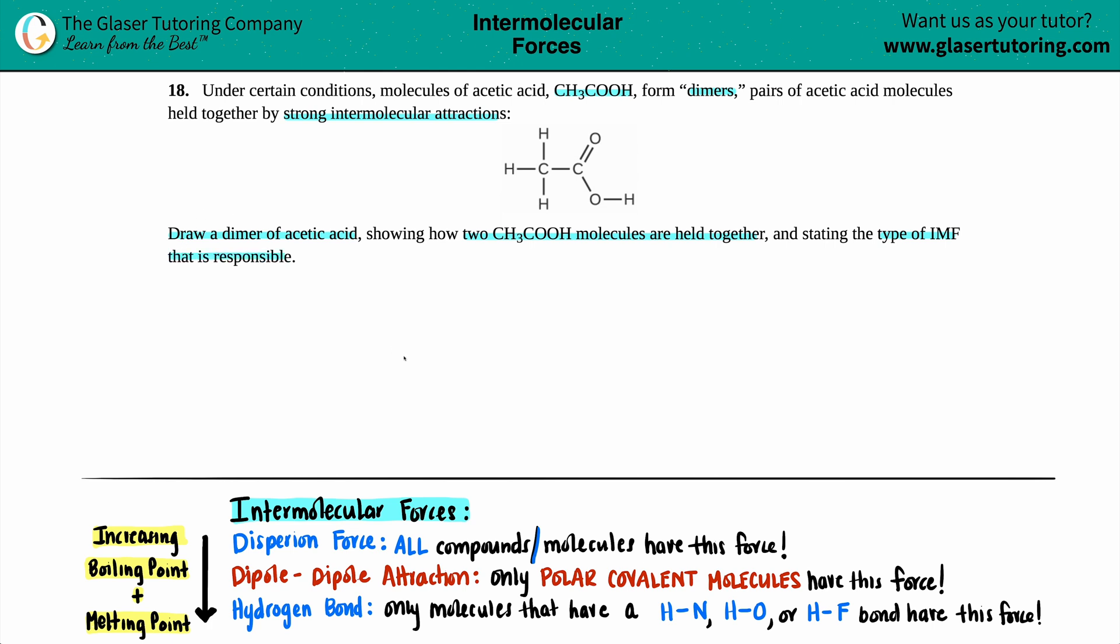All right. So first things first is I'm just going to draw one of these. Now remember, we have to form a dimer, which means that I need a pair, which means that a total of two acetic acid molecules have to be drawn, but we will start with drawing one of them. So I have an H that's bound to a C that's bound to an H that's bound to an H. And then I have a C. I'm going to draw just like they have here. And that's a double bonded O. And now I have an oxygen and a hydrogen.